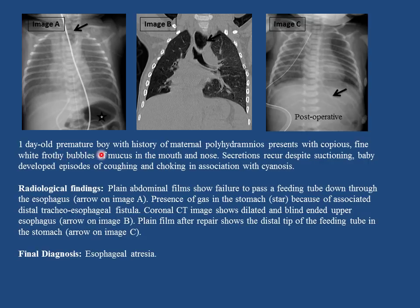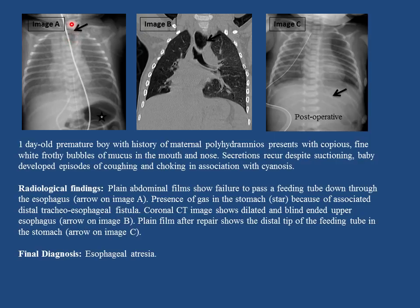This is a one-day-old premature boy with history of maternal polyhydramnios presenting with copious fine white frothy bubbles of mucus in the mouth and nose. Secretions recur despite suctioning. The baby developed episodes of coughing and choking in association with cyanosis. On x-ray, after trying to pass the NG tube, the tube coiled and failed to pass down to the stomach — a classic finding in esophageal atresia.